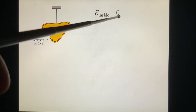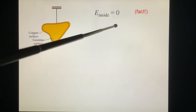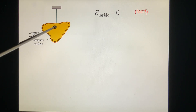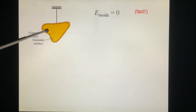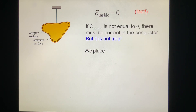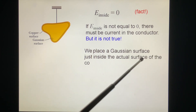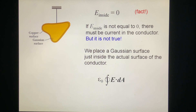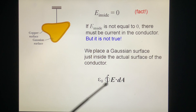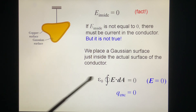E inside is zero — this is a fact. If it were not, we would find that there is a current inside, because in a conductor carriers can move around. But that is not the case, so E inside is zero. We place a Gaussian surface just inside the actual surface of the conductor. E equals zero, so Q inside equals zero. There is no charge inside the conductor.